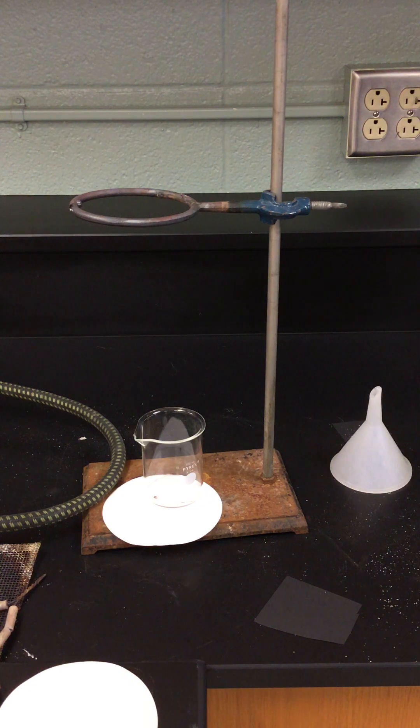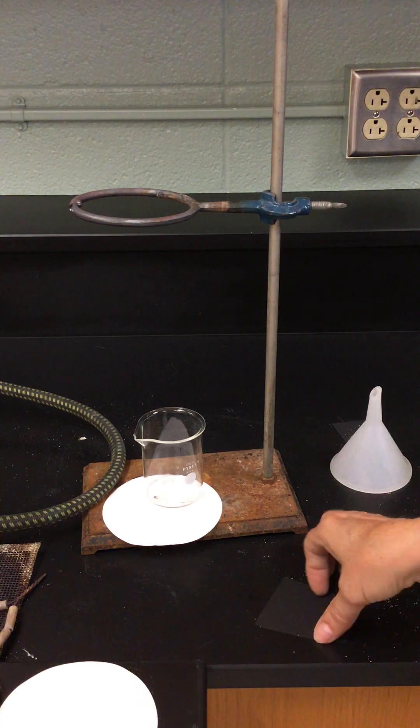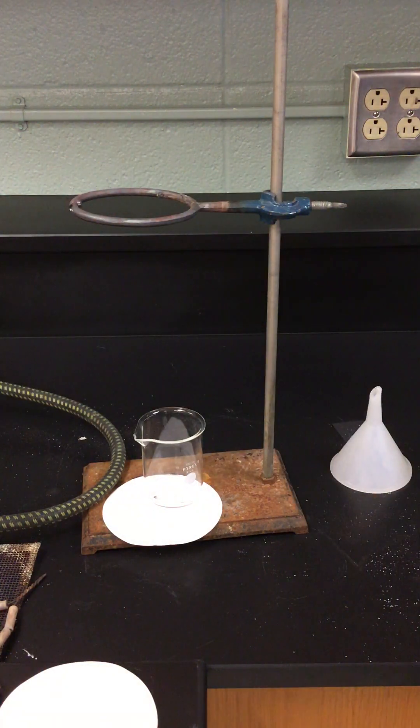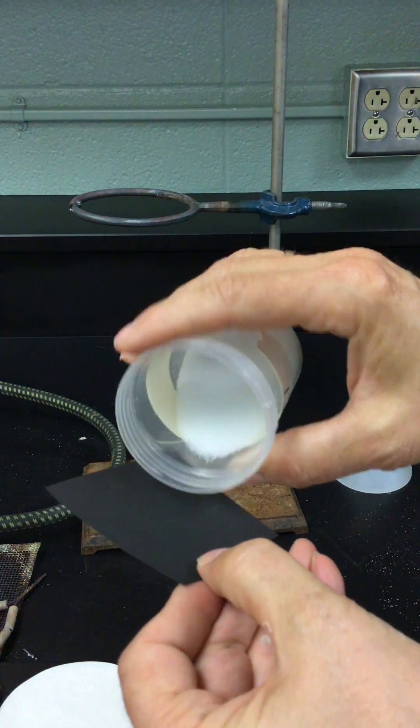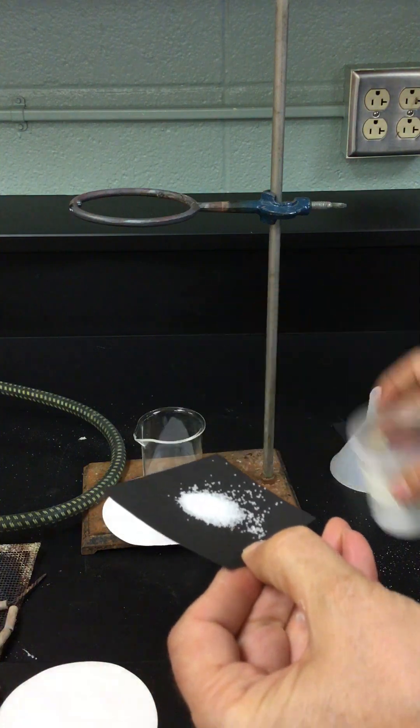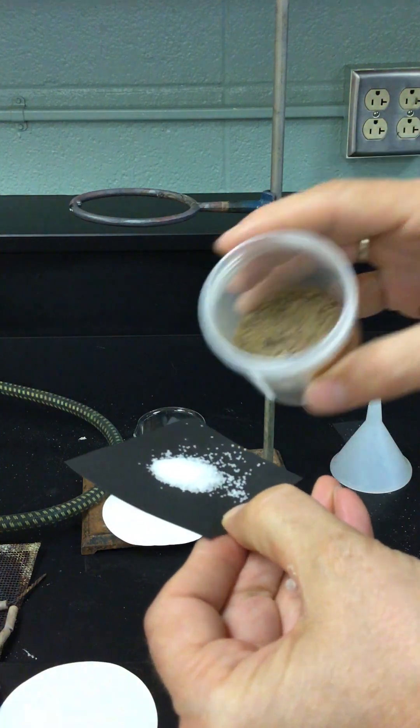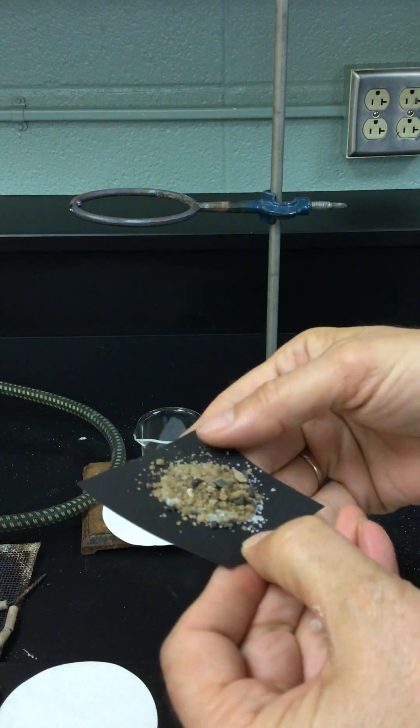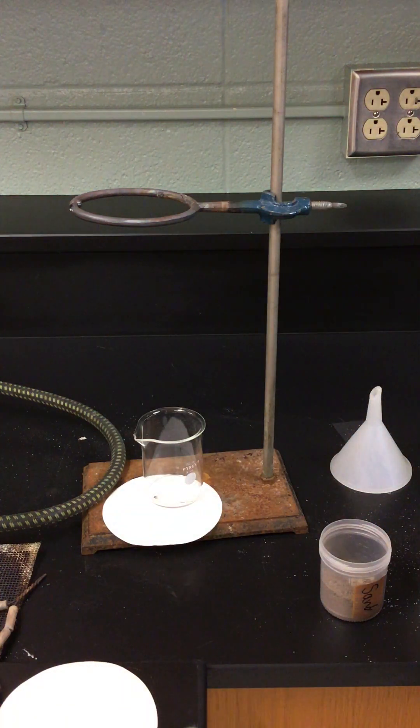This is part B of the lab and we're doing step number six. I'll be combining sodium chloride and sand on a piece of paper. I'm going to put them on this piece of black paper right here and I'm going to take a little salt and a little sand.